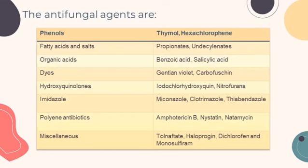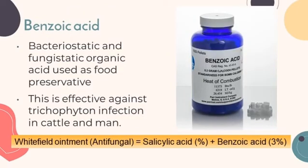The antifungal agents are classified as fatty acids and salts, organic acids, dyes, hydroxypyridinones, imidazoles, polyene antibiotics, and miscellaneous. The first example is benzoic acid, a bacteriostatic and fungistatic organic acid used as a food preservative. It is effective against Trichophyton infection in cattle and humans.